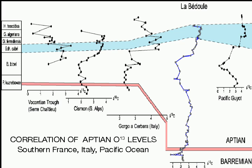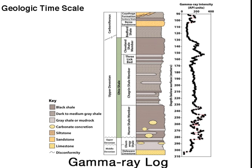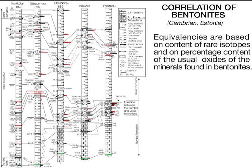And more generally, the patterns of gamma ray logs from wells and outcrops are widely used to demonstrate correlation of diverse strata. Volcanic tuffs fall on both land and sea, and individual tephra are identifiable by the kind and percentage of trace elements in them. The example here is a correlation of bentonites in Estonian wells that drilled the older Paleozoic.